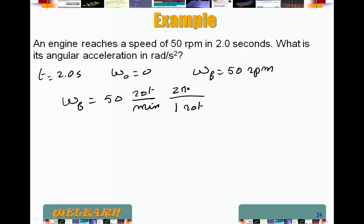One rotation is 2 pi radians. We'll get into that a little later, but that's the conversion factor. And then minute, I need to get rid of it in the denominator. So I multiply it by minute in the numerator, and that's 60 seconds.